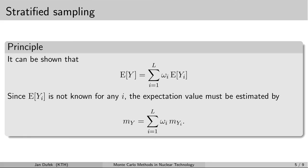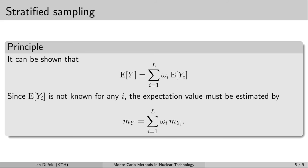The weighting by the omegas is necessary in order to correctly reflect the distribution of the input random variable samples. It is possible to show that the variance of the final mean value of the output random variable y is given by a summation over L groups, where within each term we have the variance of the output random variable in the i-th group divided by the number of samples generated within that group.